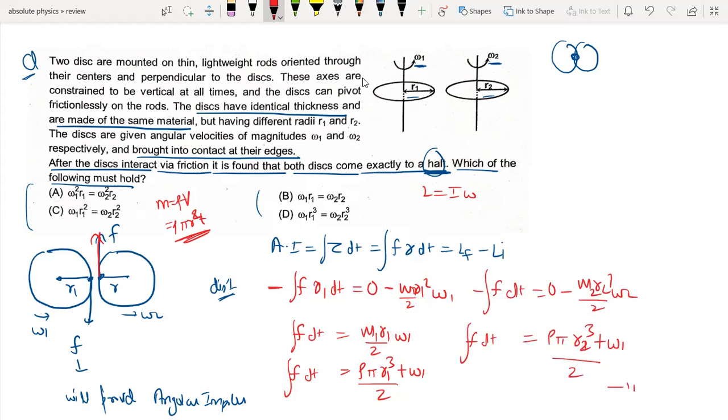Comparing equation 1 and 2, rho, pi, and t cancel. So we are left with r1 cubed times omega 1 equals r2 cubed times omega 2. This is the answer from the options.